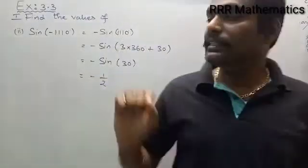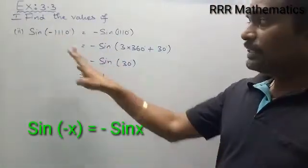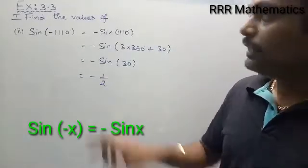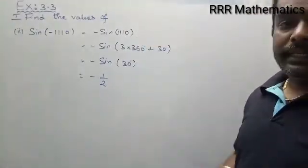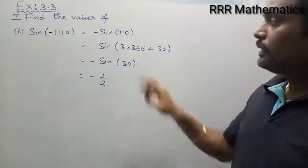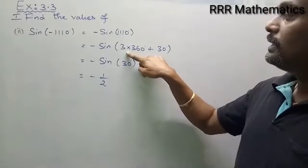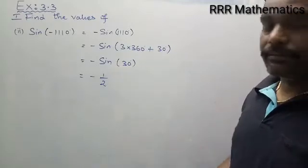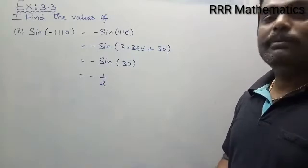To repeat: sin(minus 1110 degree) — since minus theta lies in the fourth quadrant, where sin is negative, we get minus sin 1110 degree. Now 1110 divided by 360 gives 3 times 360 plus remainder 30 degree. The multiple of 360 is considered as 0, so sin(3 times 360 plus 30) becomes sin 30. Sin 30 equals 1 by 2, so the final result is minus 1 by 2.